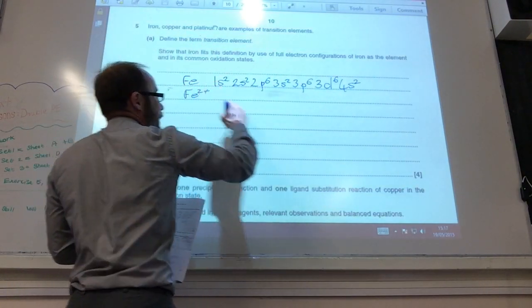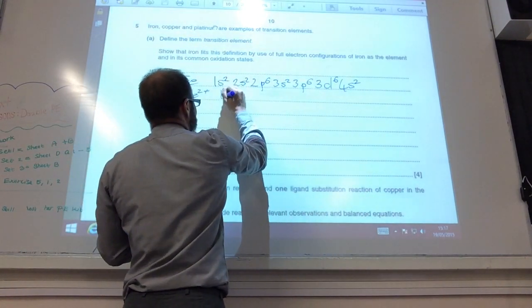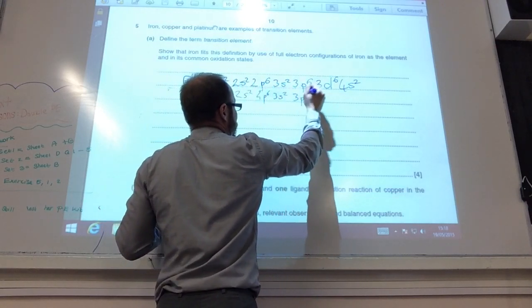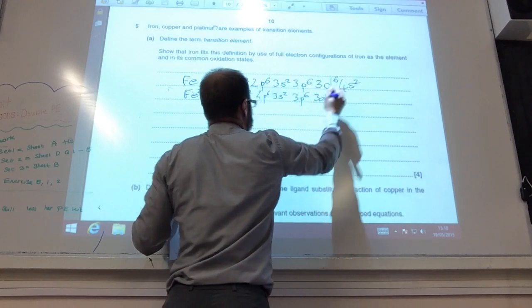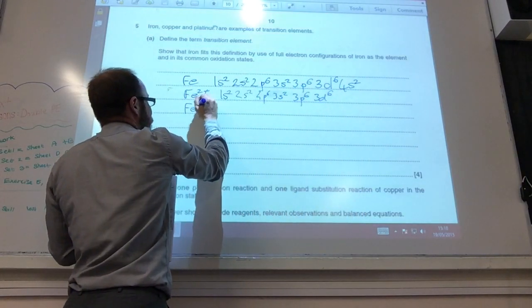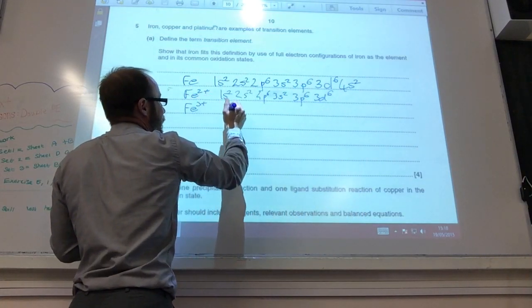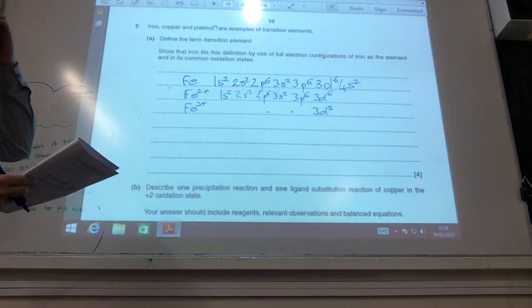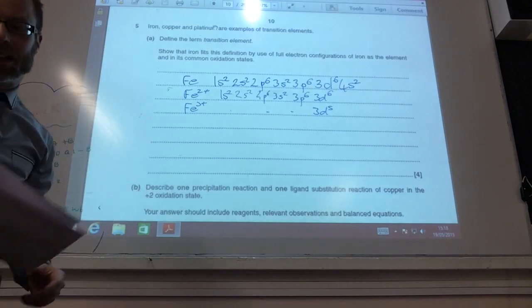Fe2+, remember I'm using 4s first, so it's going to be that, and then Fe3+ is going to be all of this but with 3d5 because it's lost another electron. So yeah, it does fit that trend.